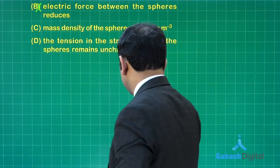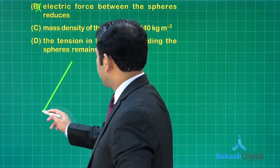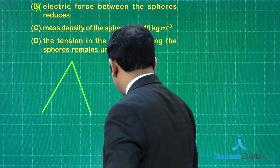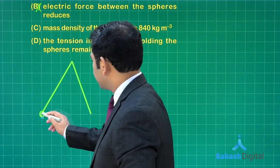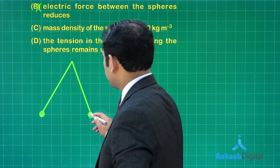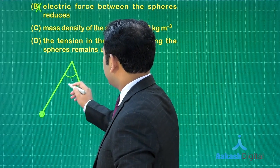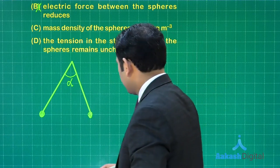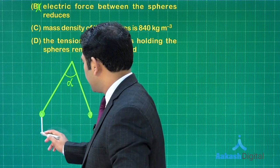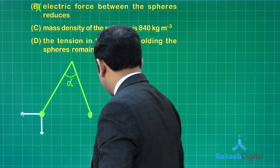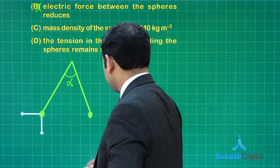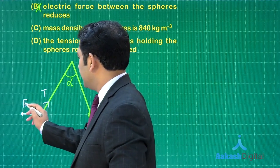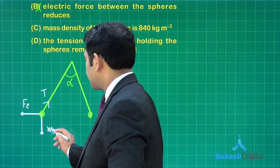Let's take the help of a figure. These are the two strings from which the block has been tied. This angle is alpha. Let's make the free body diagram: here is mg, here is the repulsive force, and this is the tension. You can see this is the electrostatic force and this is mg.